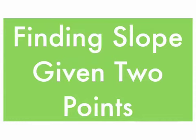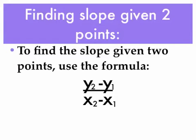Finding Slope Given Two Points. To find the slope given two points, or two ordered pairs, you're going to use the formula y sub 2 minus y sub 1 over x sub 2 minus x sub 1.